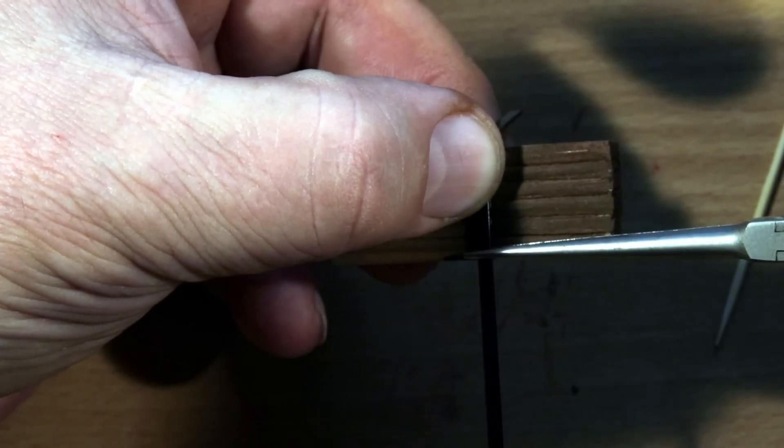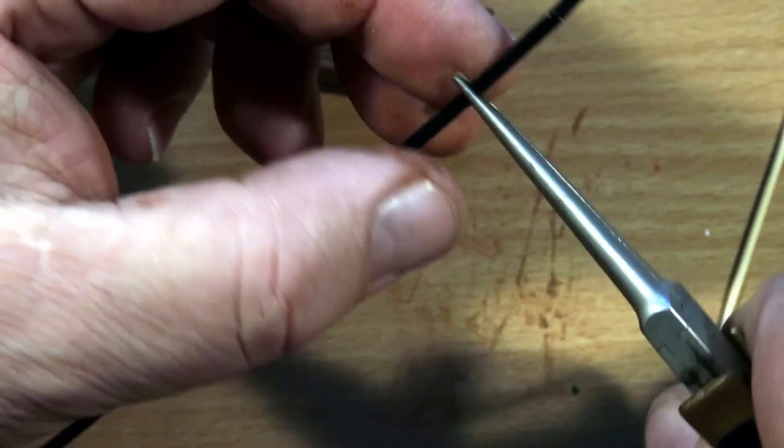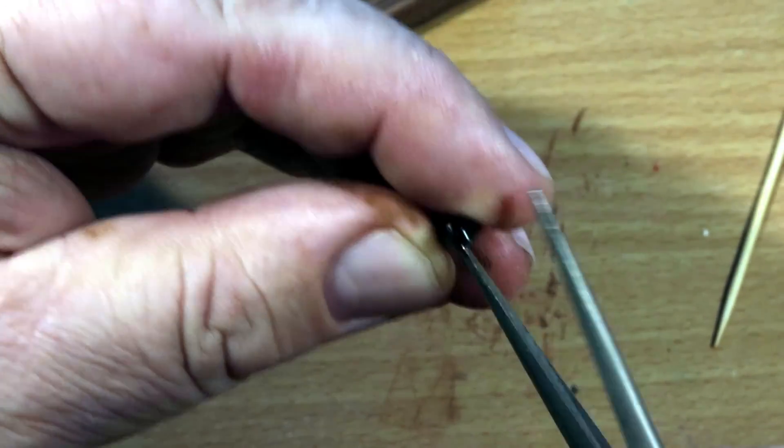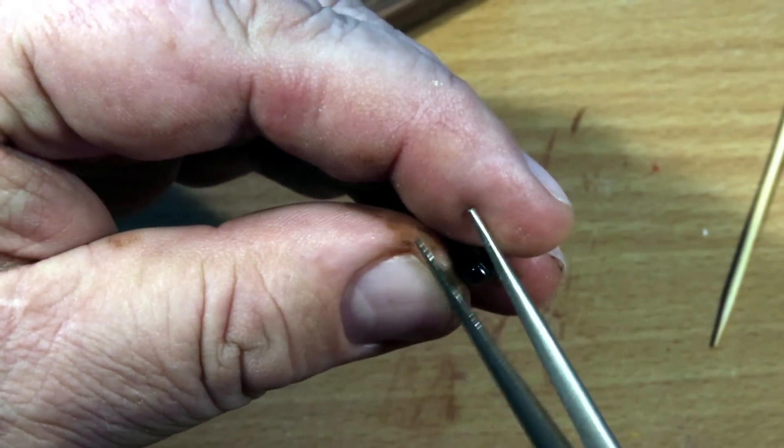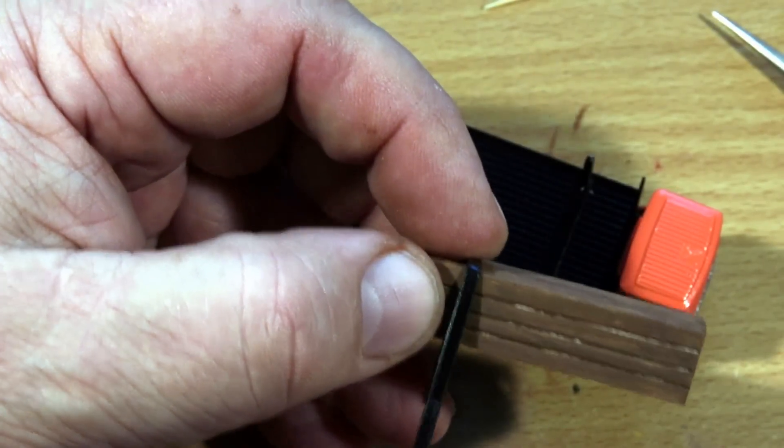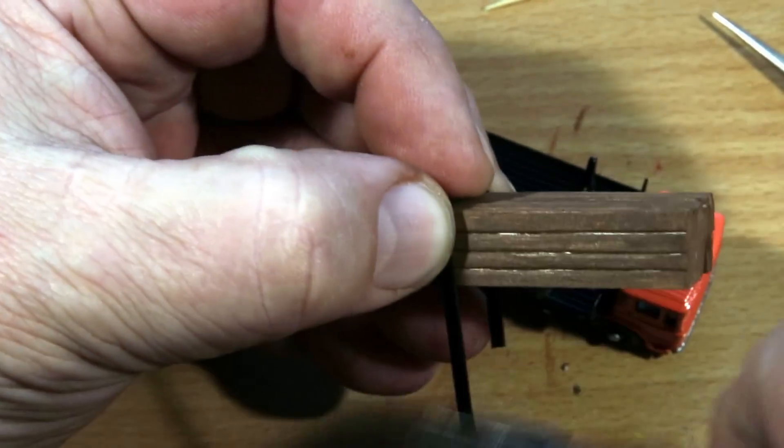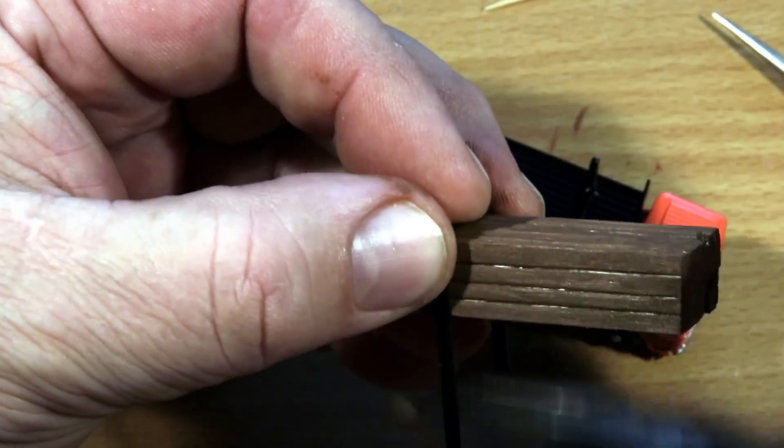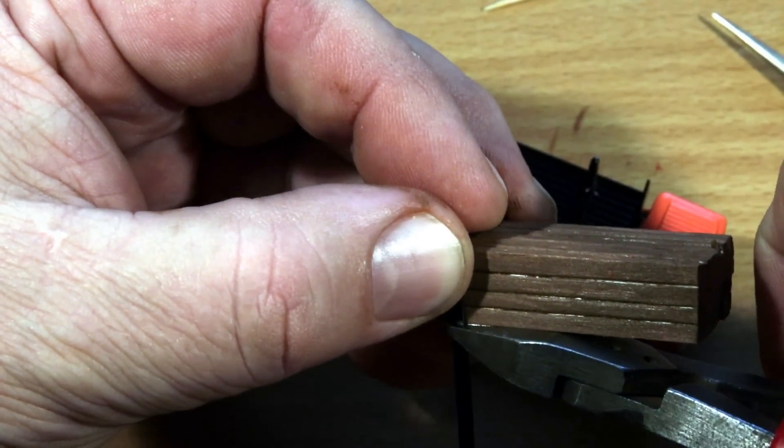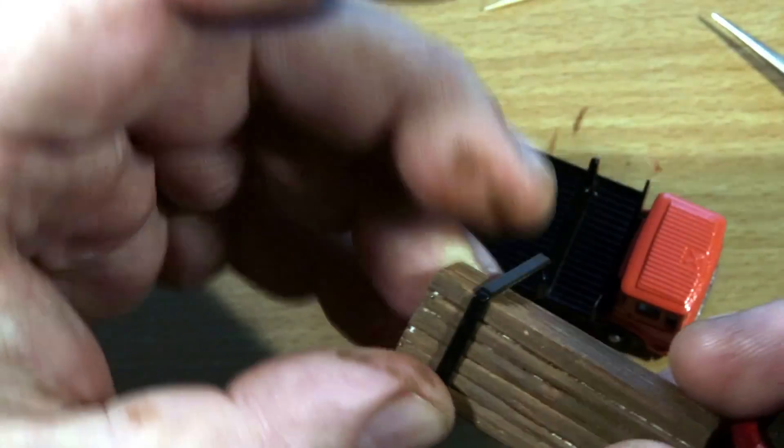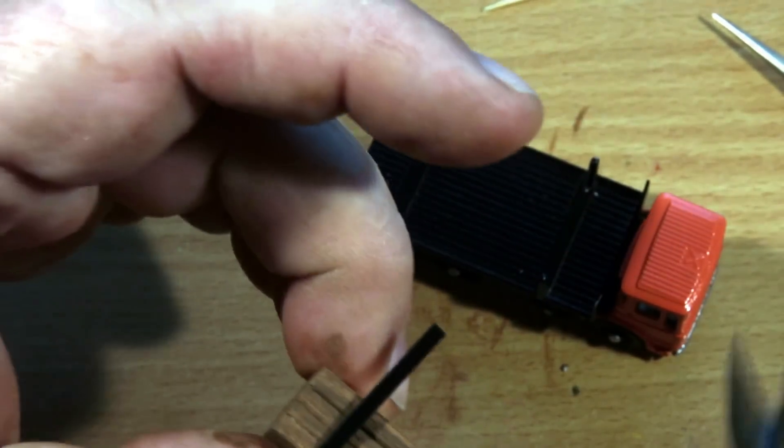So I folded it once and then I actually crimped it really hard so that it would hold its form. Then once I had it to the shape that I wanted, I had cut it a little bit long.